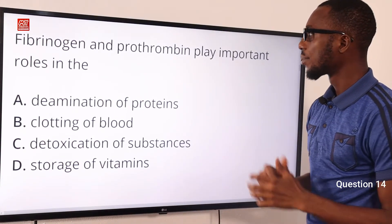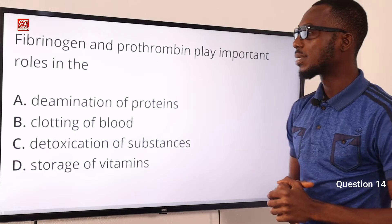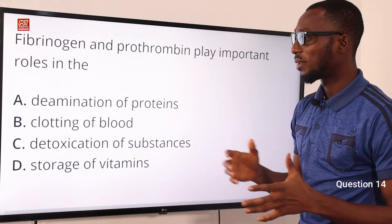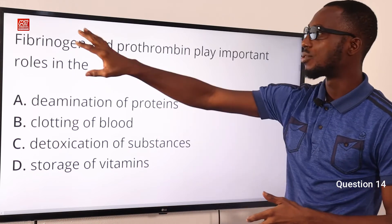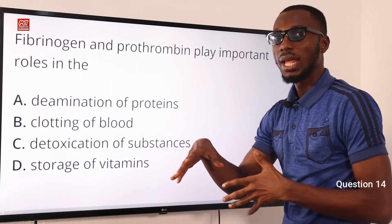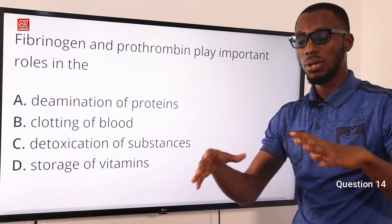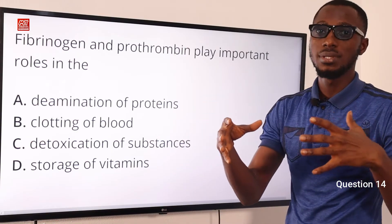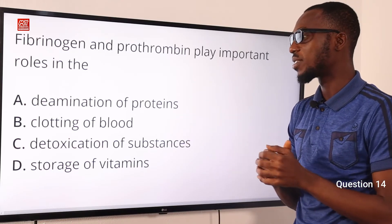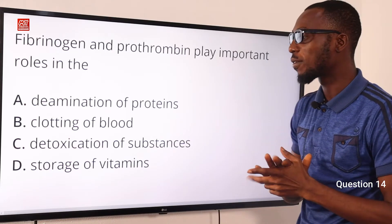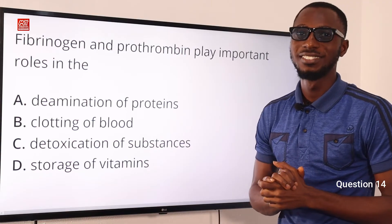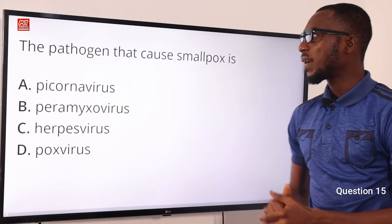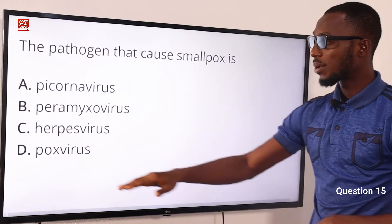Question 14: Fibrinogen and prothrombin play important roles in what? They are important in the clotting of blood. Fibrinogen is converted to fibrin, which forms a mesh-like material that traps red blood cells to enable blood clotting. The correct option is B: clotting of blood.